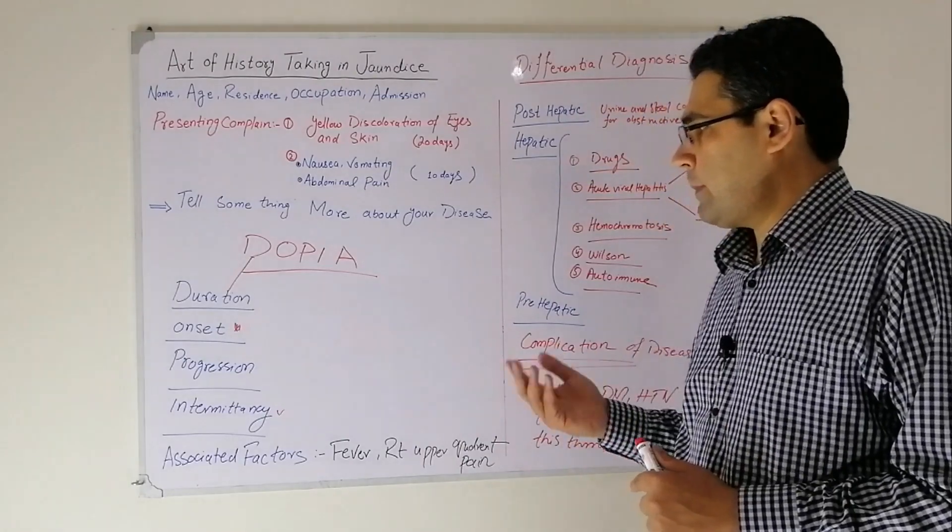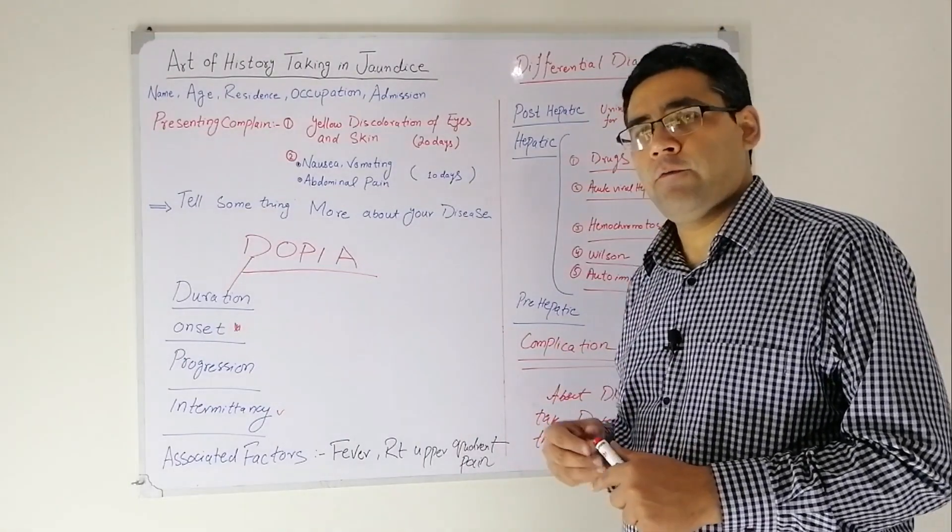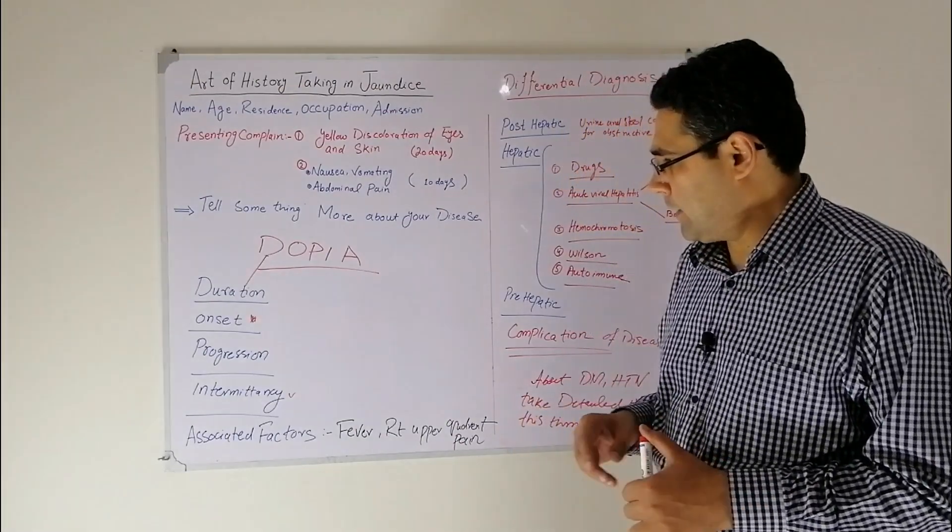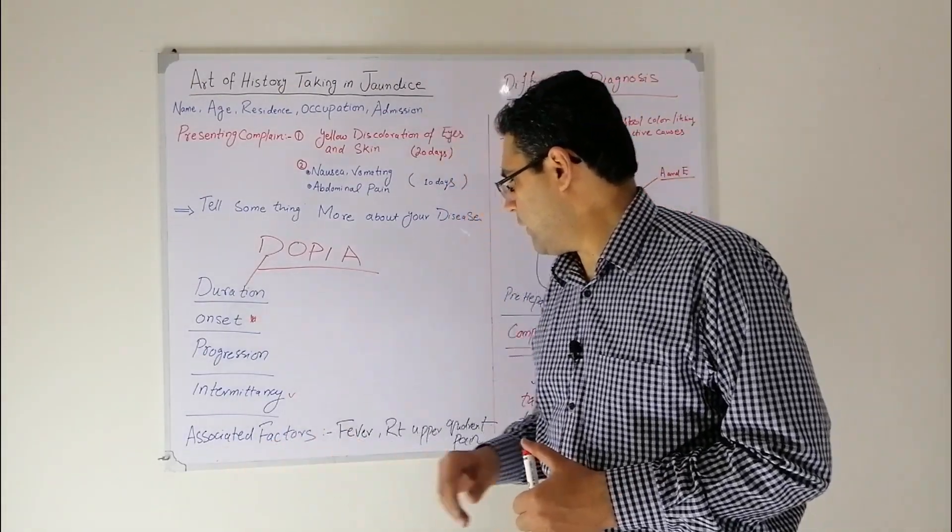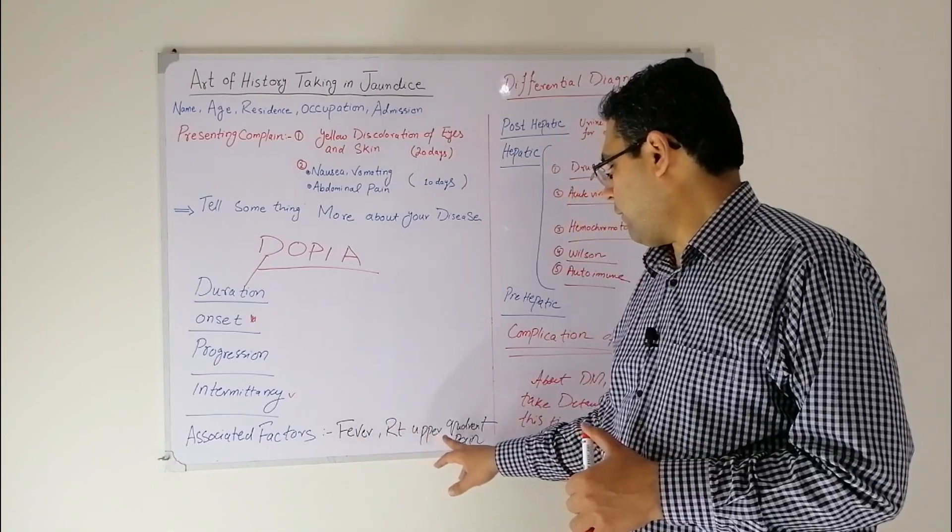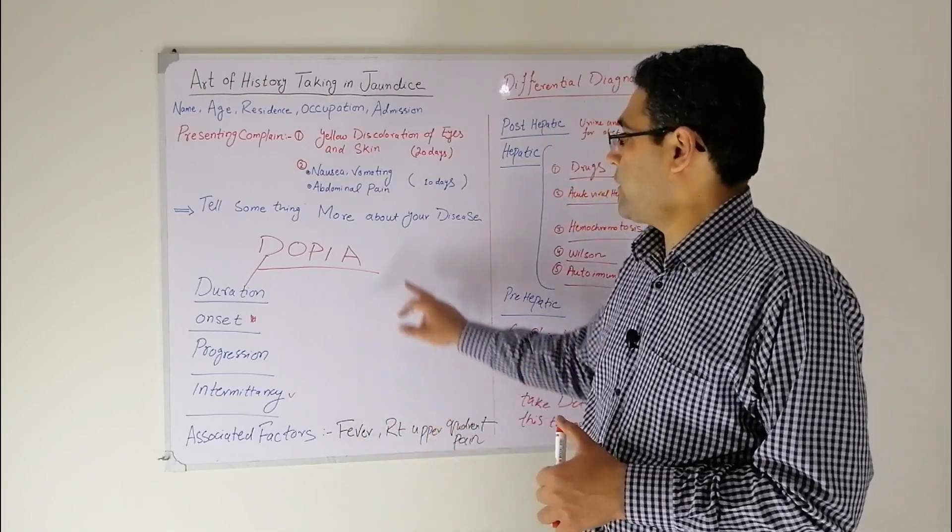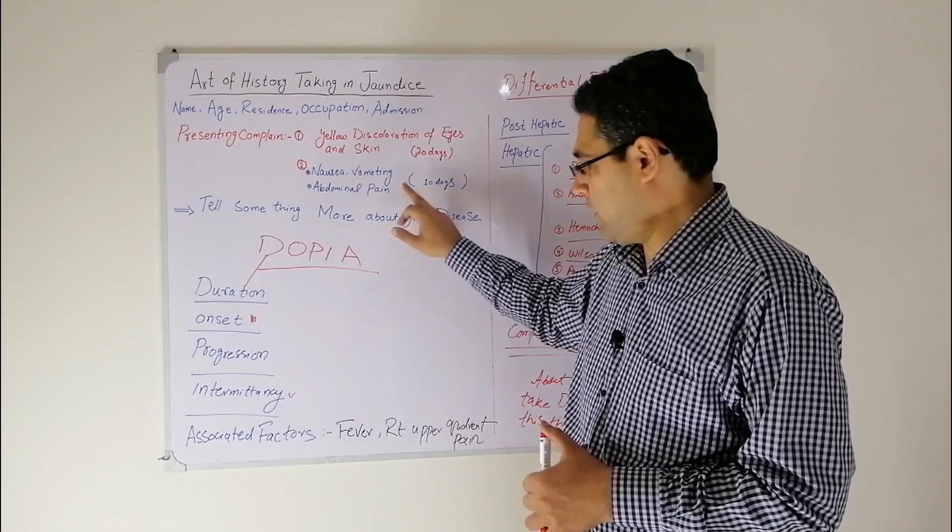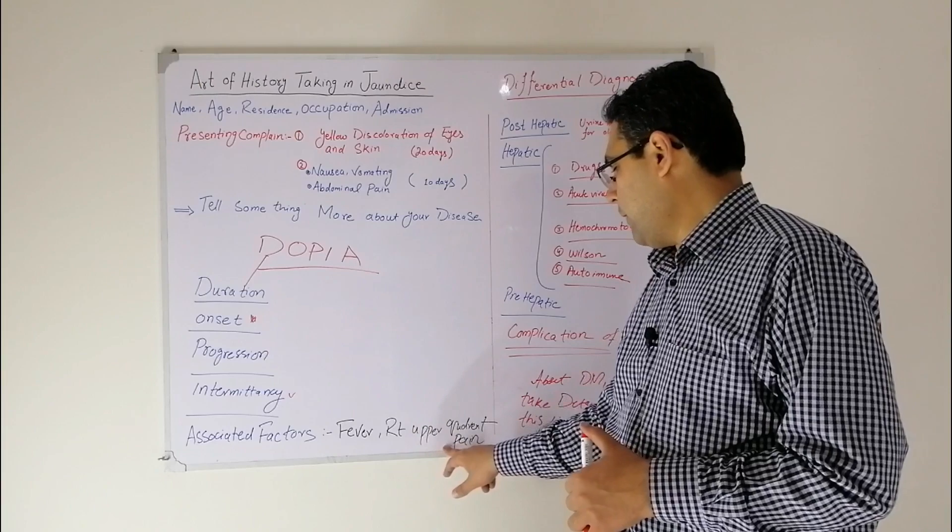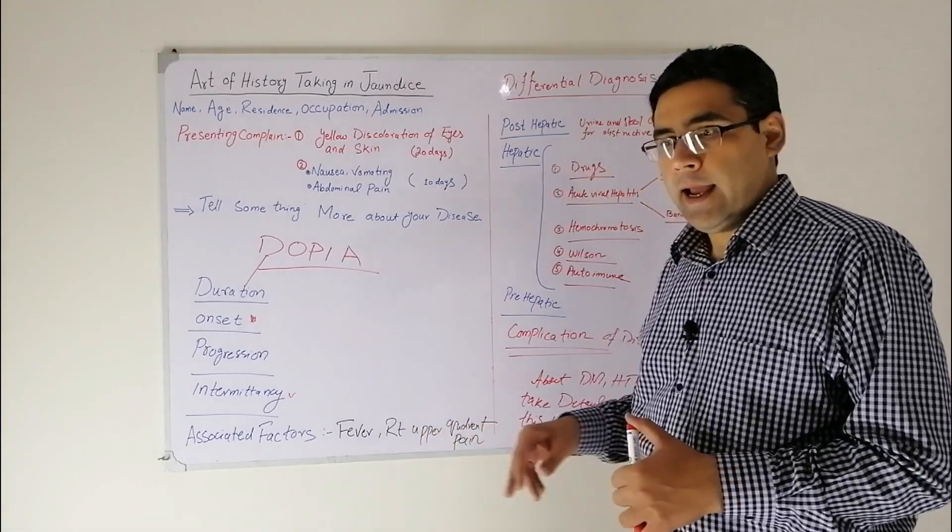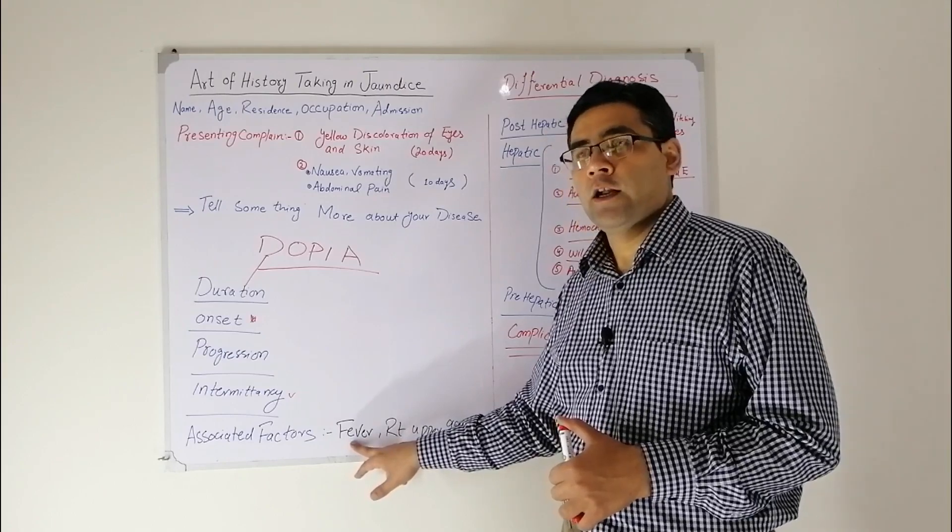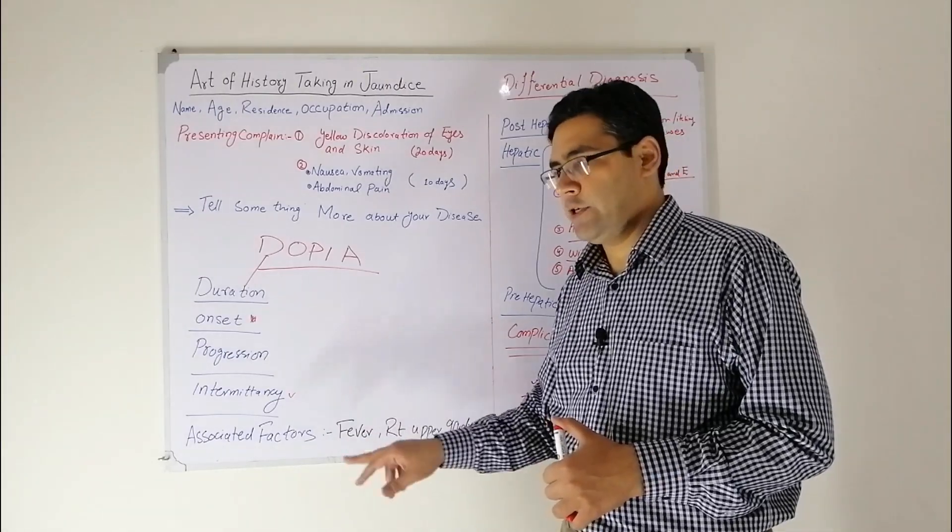By asking the intermittency question, you will rule out Gilbert syndrome. Ask the patient if there is any history of jaundice before this disease. Then comes the associated factors. Ask about fever and right upper quadrant pain to rule out acute hepatitis and cholangitis.